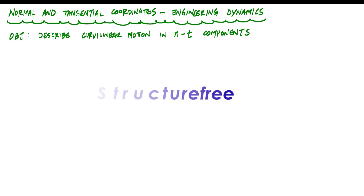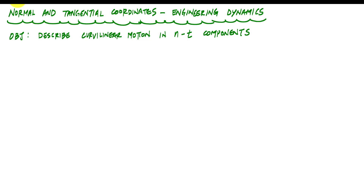Welcome back to Structure-Free Learning. In this video, we're going to go back to engineering dynamics and explain normal and tangential components used to describe curvilinear motion. By the end of this video, you'll have a sense of where normal and tangential components come from, how to define them on the particle, and how to use them to solve problems. So let's start with a particle moving on a curved path.